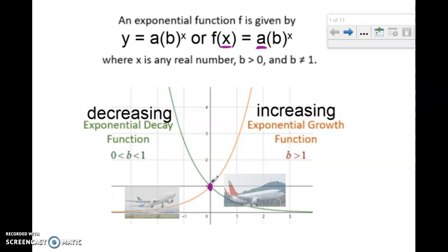Now the b value is the multiplying factor, and that multiplying factor can either decrease or increase. As you can see, it's never equal to one, and it's always greater than zero.